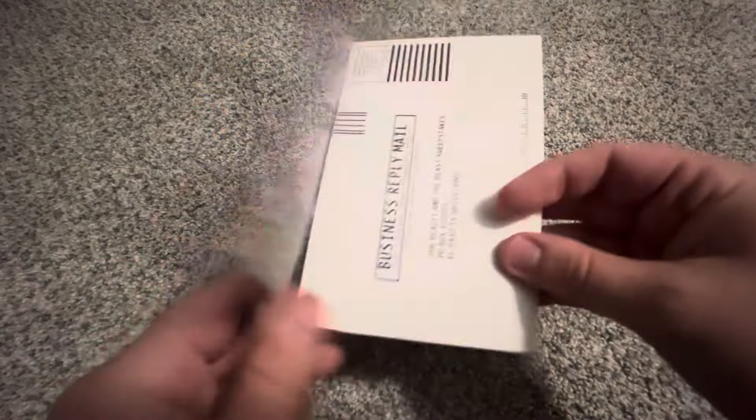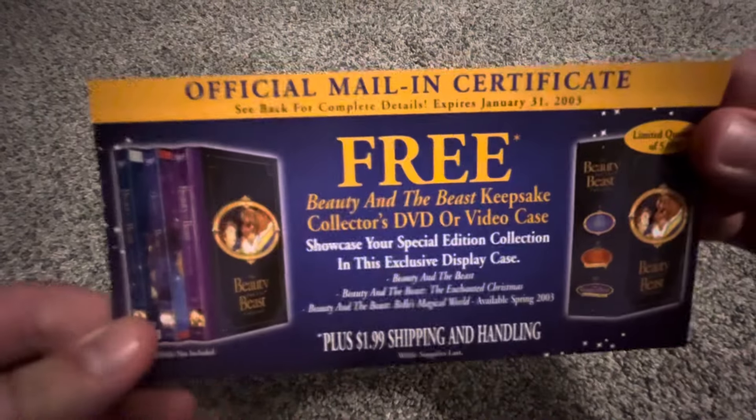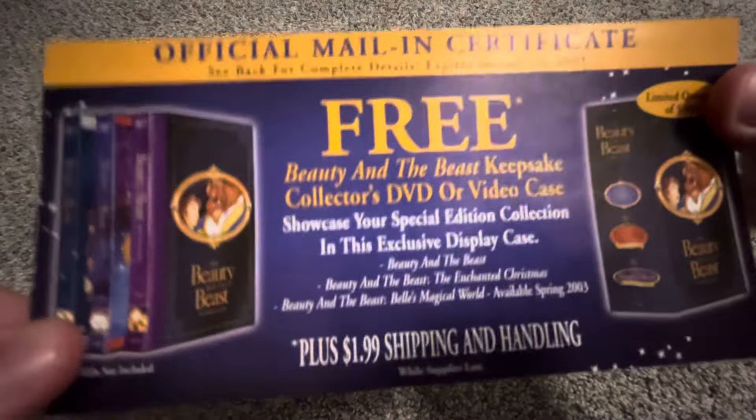And then we have two 2002 Platinum Edition VHSs. This one does not have that slide-in poster. This one actually did get recently, earlier this year. This one actually works and is not damaged at all. THX Certified, featuring an all-new musical sequence. And that would be Human Again. Here is the spine. Cogsworth and Lumiere. In the back, 'A tale as old as time is new again.' Special Features: fully restored and remastered with an all-new remix soundtrack, THX Certified, and an all-new music video, A Beauty and the Beast by Pop Sensation Jump 5.